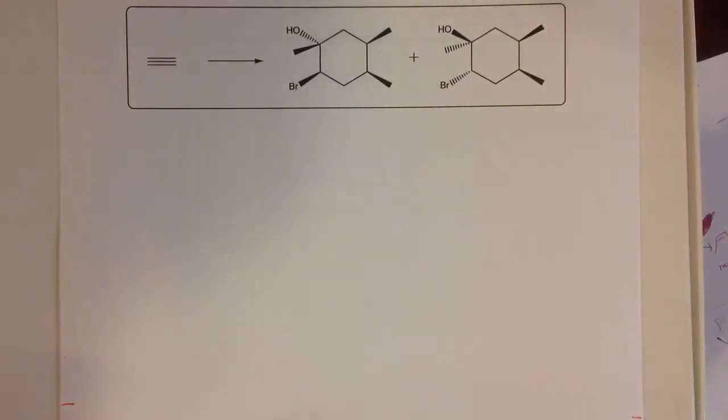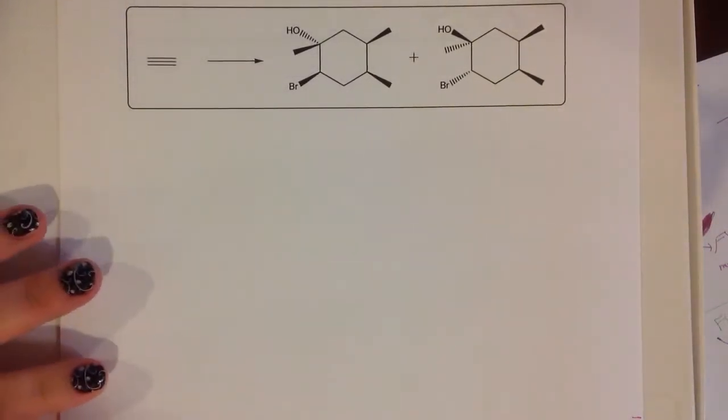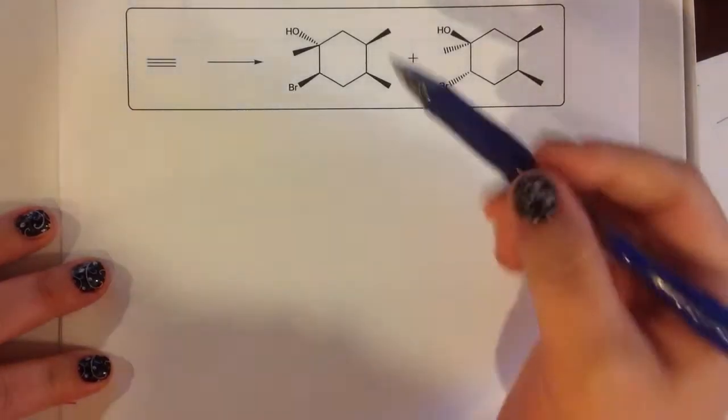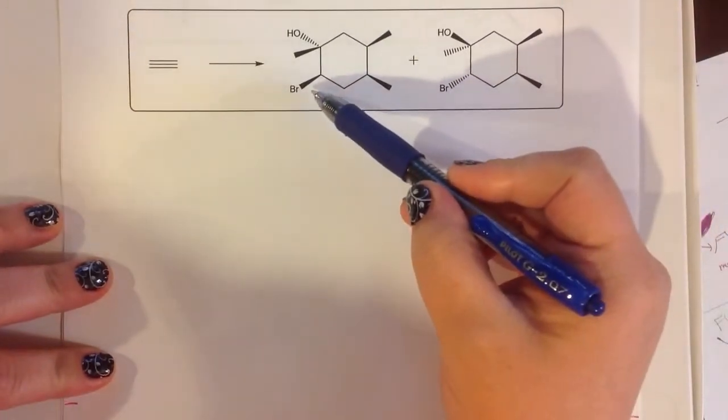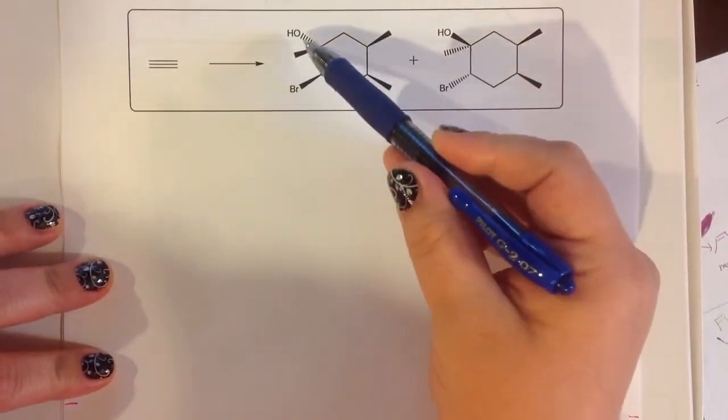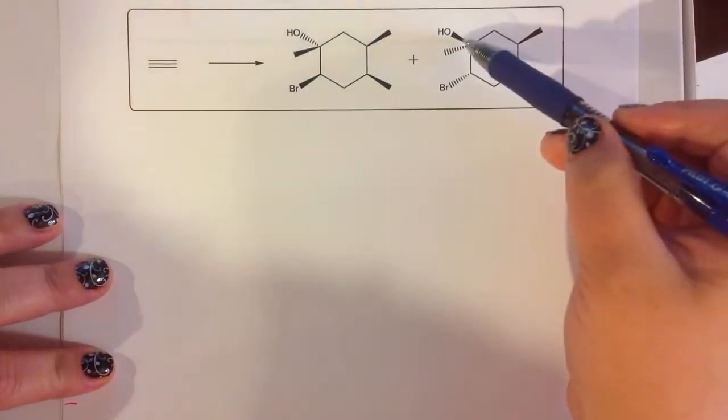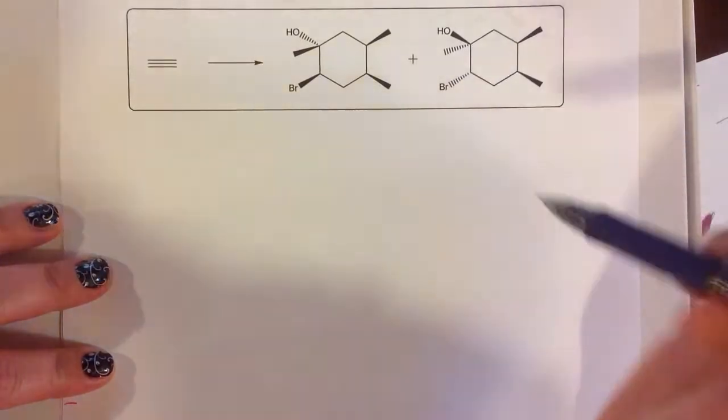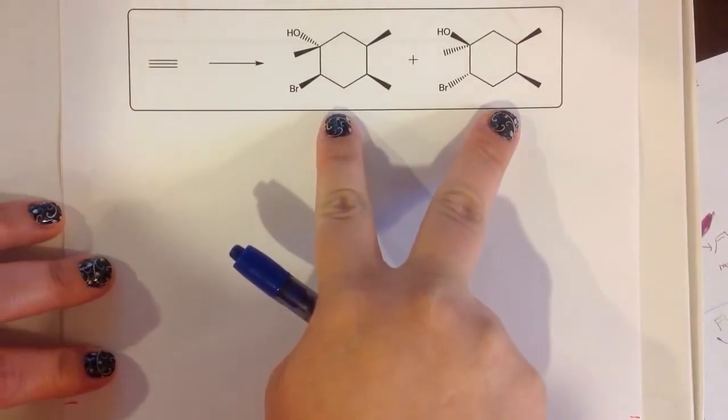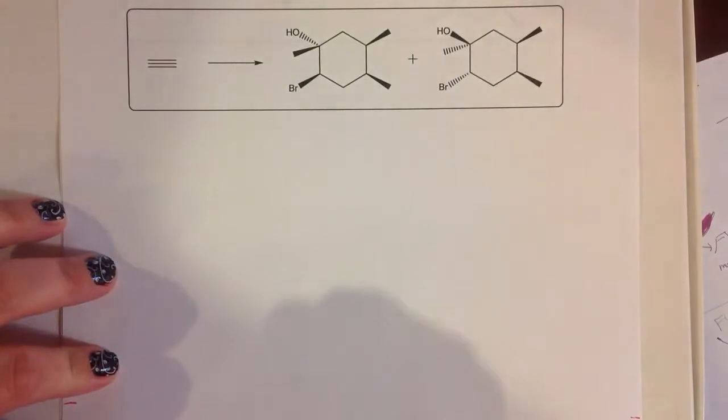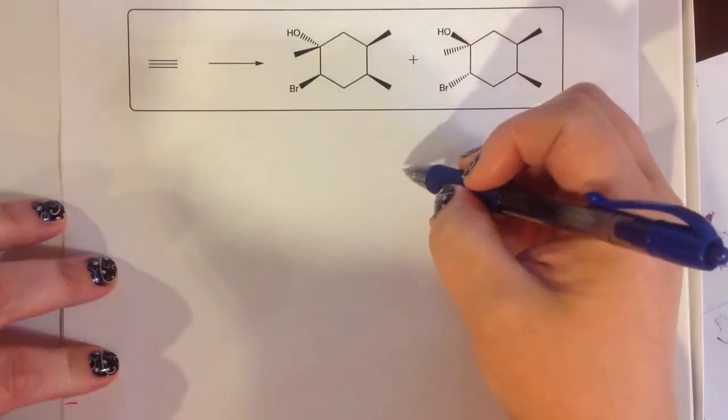Okay, for problem one, the first thing that I'm going to notice in this particular reaction is the fact that I have two products that have a bromine and an alcohol that are trans to one another. And that's really the difference between these two products. That's the only thing that's the difference between those two products. That leads me to think that